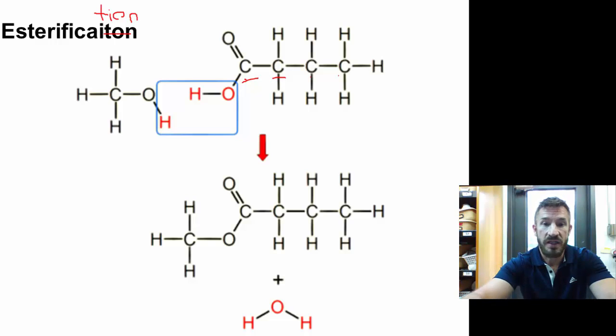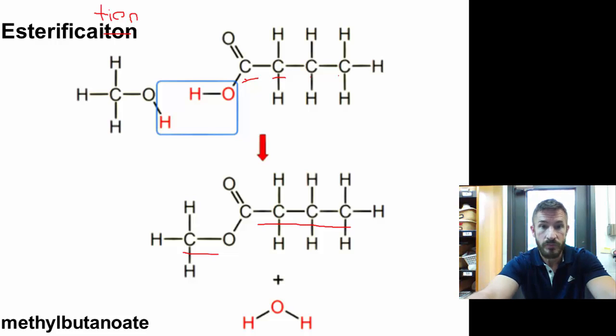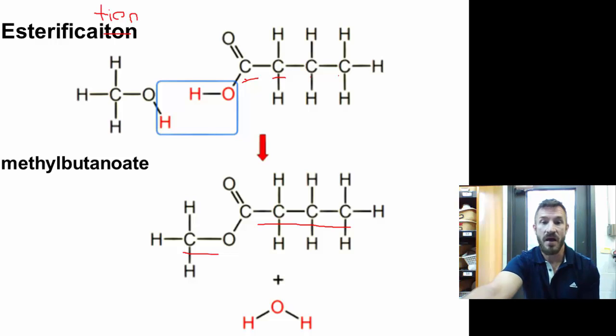And at the end, we end up with methyl. And then this, we name it with the four carbons, which are right here, butanoate and water. So, the product of this reaction is methyl, the part from the alcohol, butanoate, the part from the organic acid, which is butanoic acid.